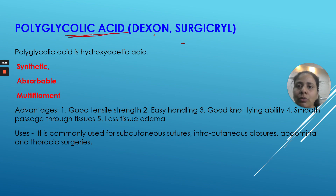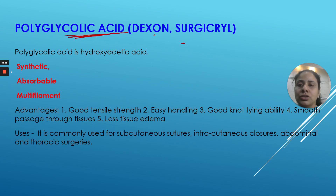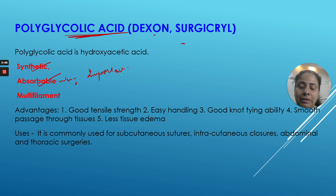Although we do not use polyglycolic acid directly much in the oral cavity, it is important because it is the basis of polyglactin 910, which we use a lot in the oral cavity. This is a synthetic, absorbable suture material. Earlier we studied non-absorbable suture materials like prolene and nylon; now we are moving to absorbable materials. Polyglycolic acid has a multi-filament structure.